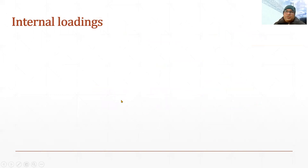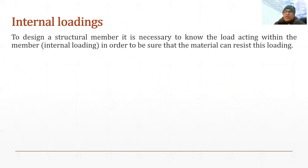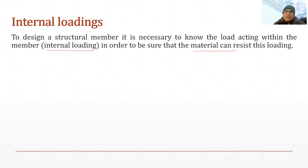Now talking about internal loading. Whenever we are going to design a structural member, it is very important to know what loads are acting within the member — the load acting internally. That load is known as internal loading. Why do we need to know this? In order to be sure that the material of the member can resist the load. Therefore, determination of internal loading becomes very important for designing a member. These internal loadings can be determined by many methods, and one very common method is the method of sections. That is what we are going to discuss — we have already covered method of sections in the previous lecture, and we will use the same concept here to find internal loading for the beam.